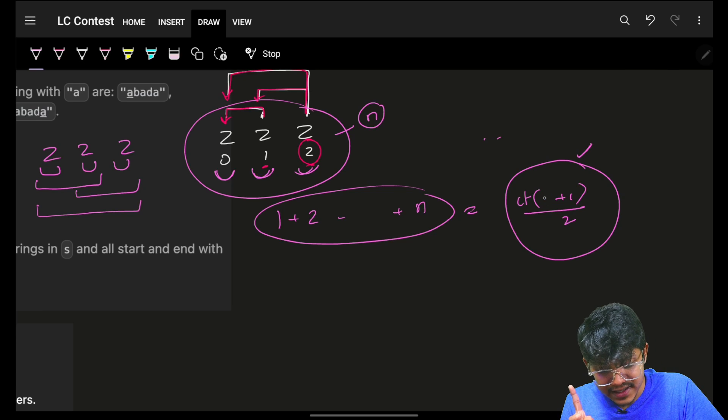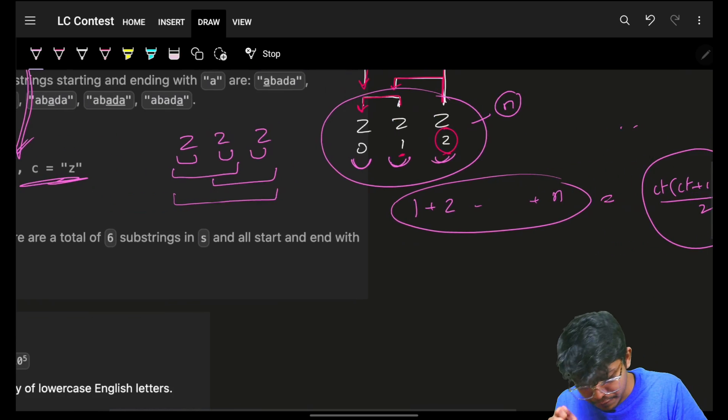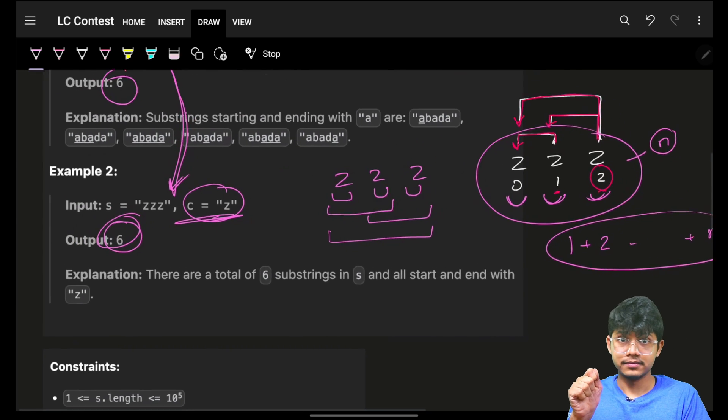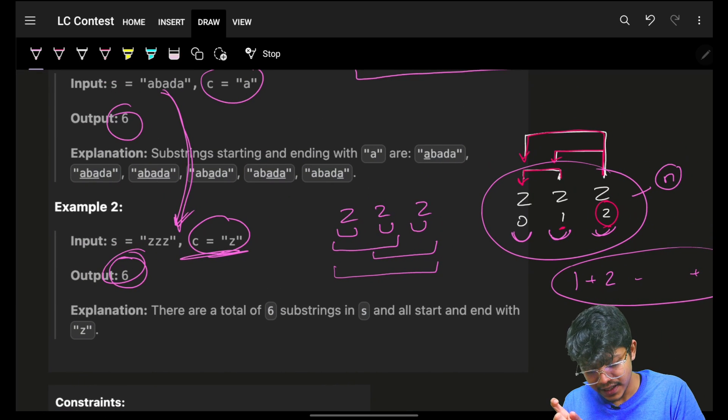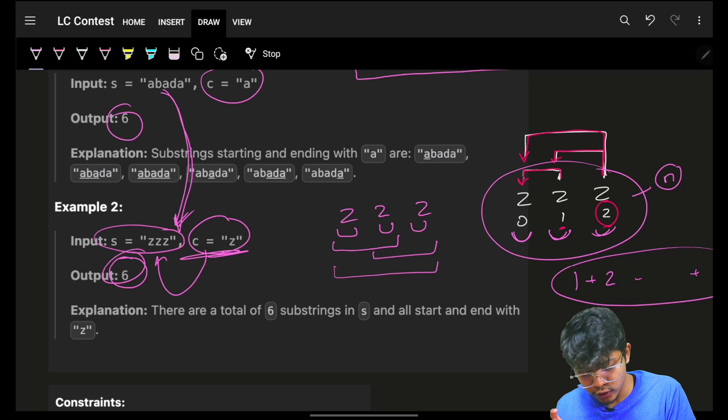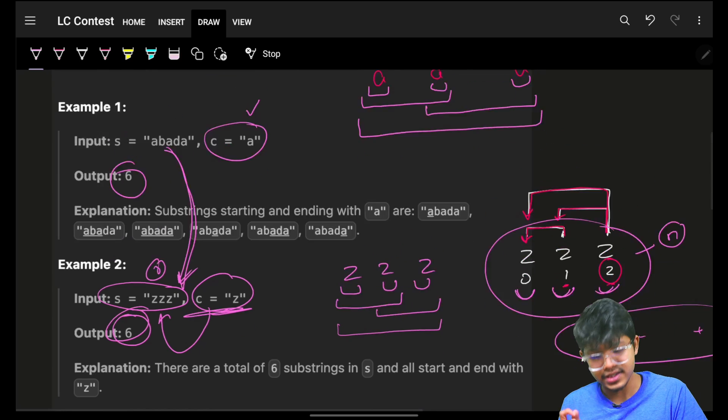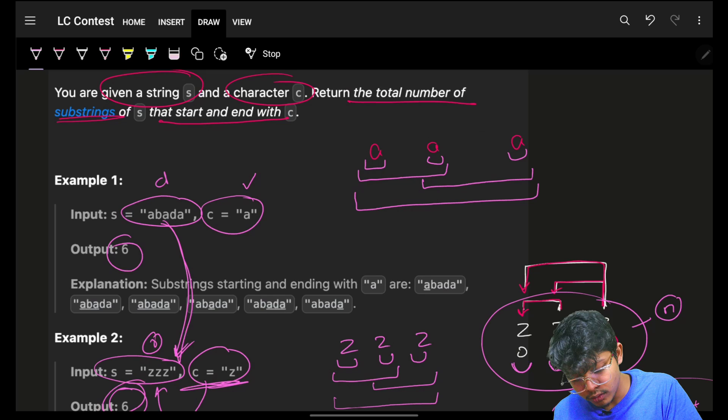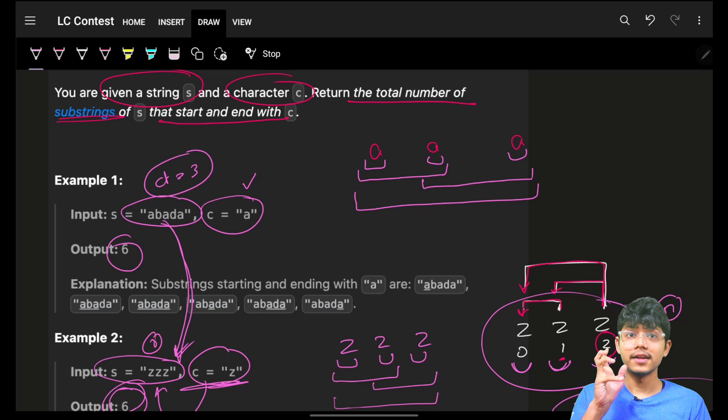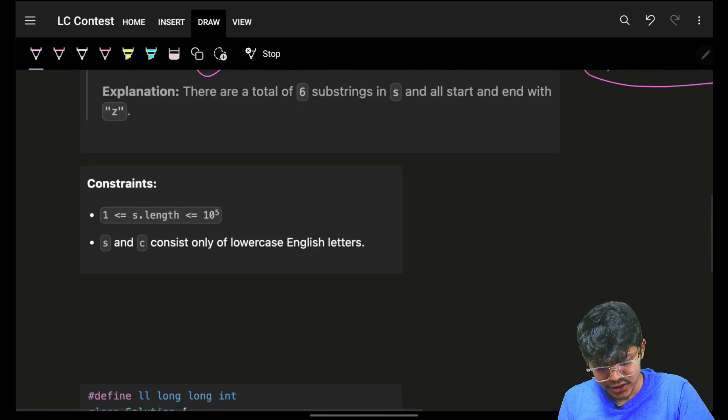Again, remember this n is the count. This n is the count of character c in the actual string s. In this, the count of character c, which is z in our case, is actually three. So count is three. In this case also, the count is actually three, right. And that's the answer for us.